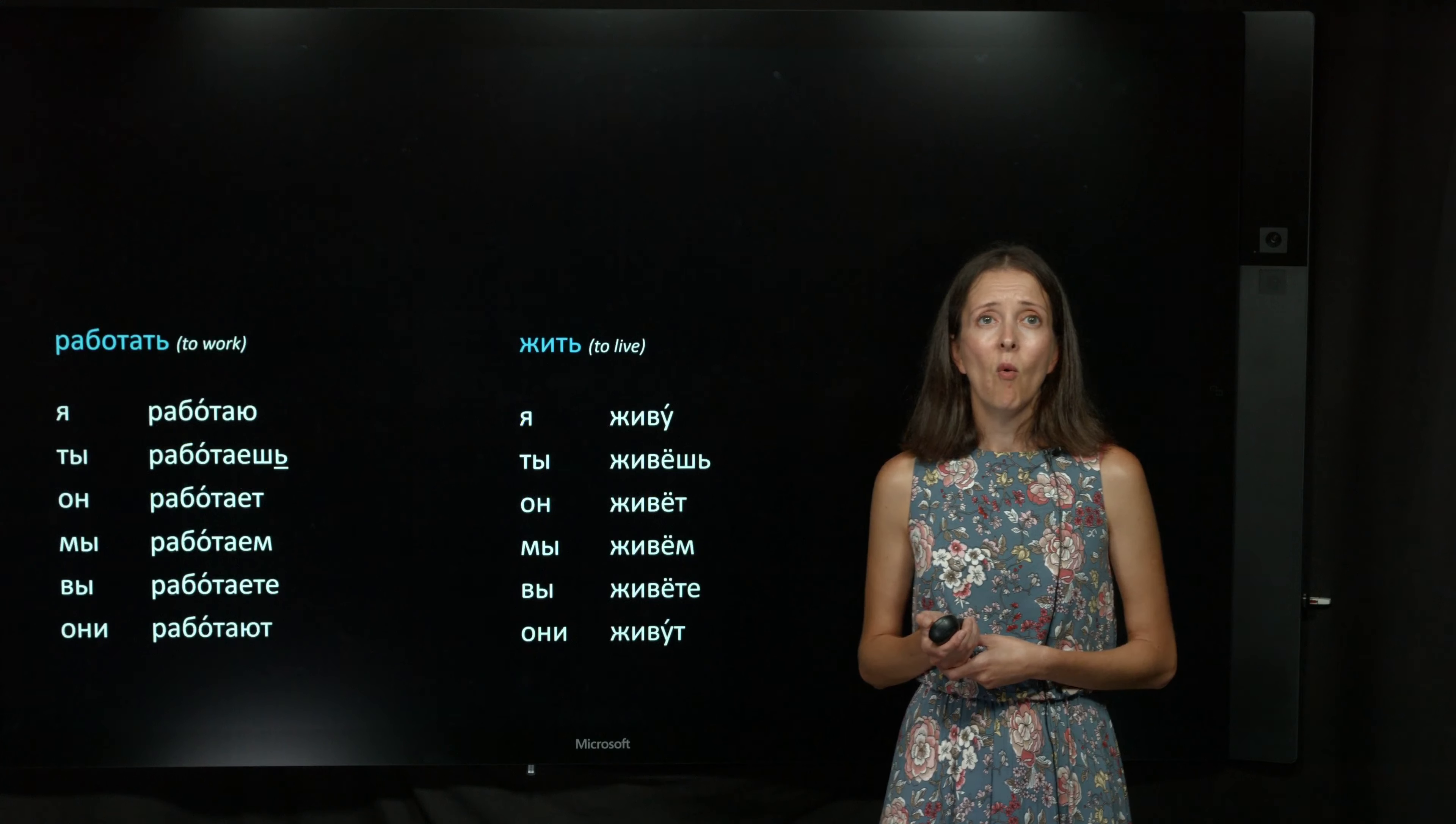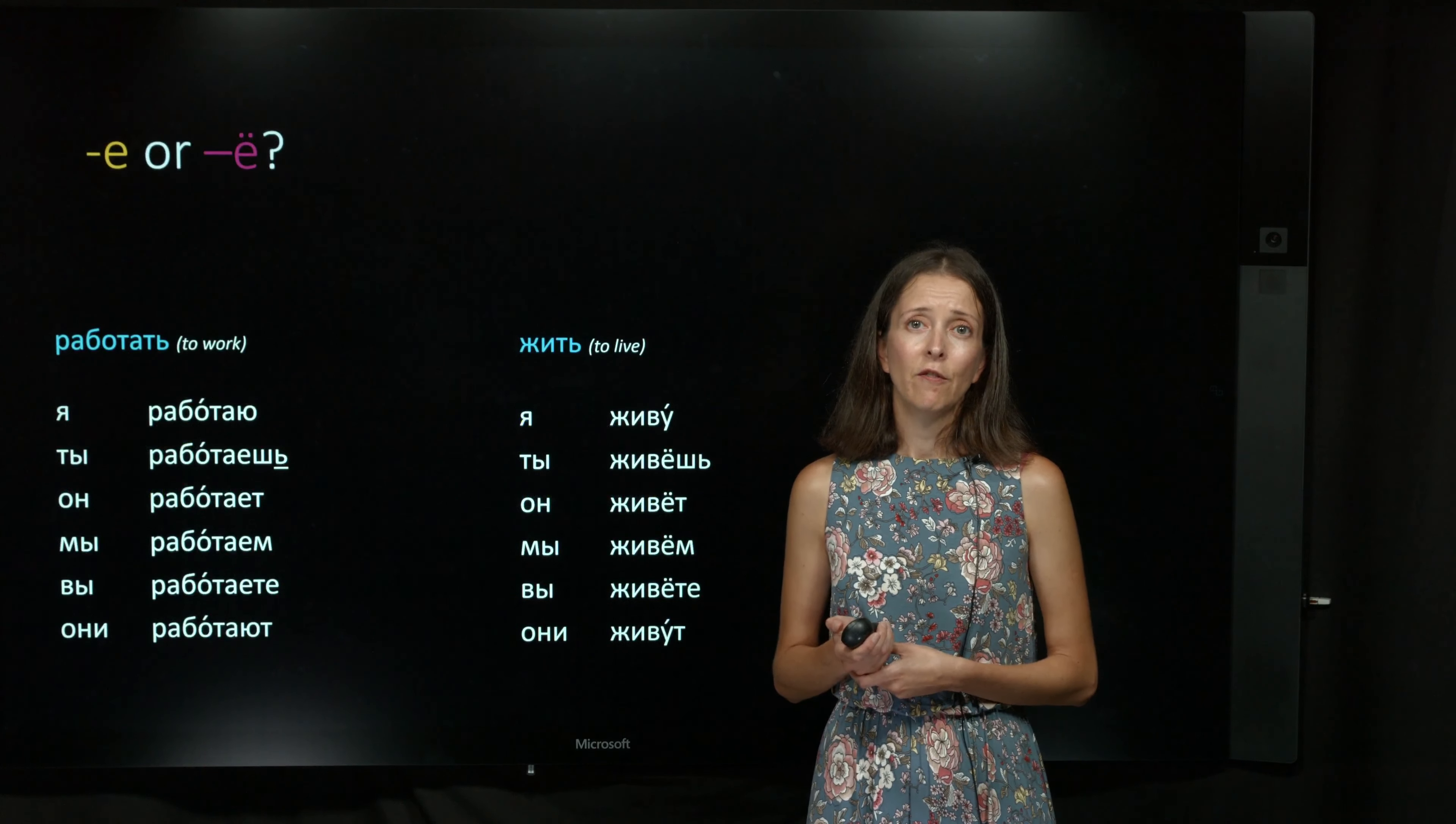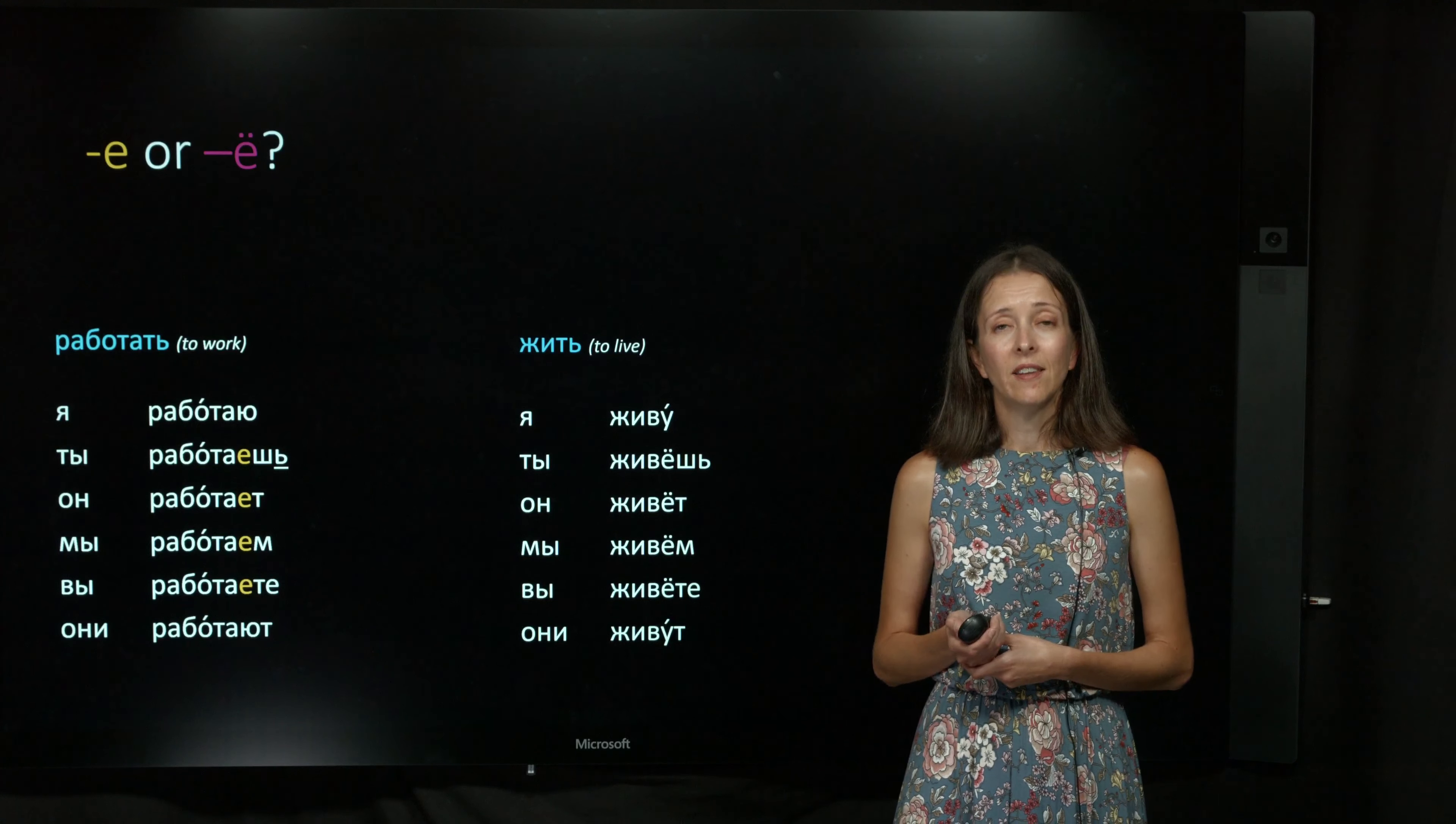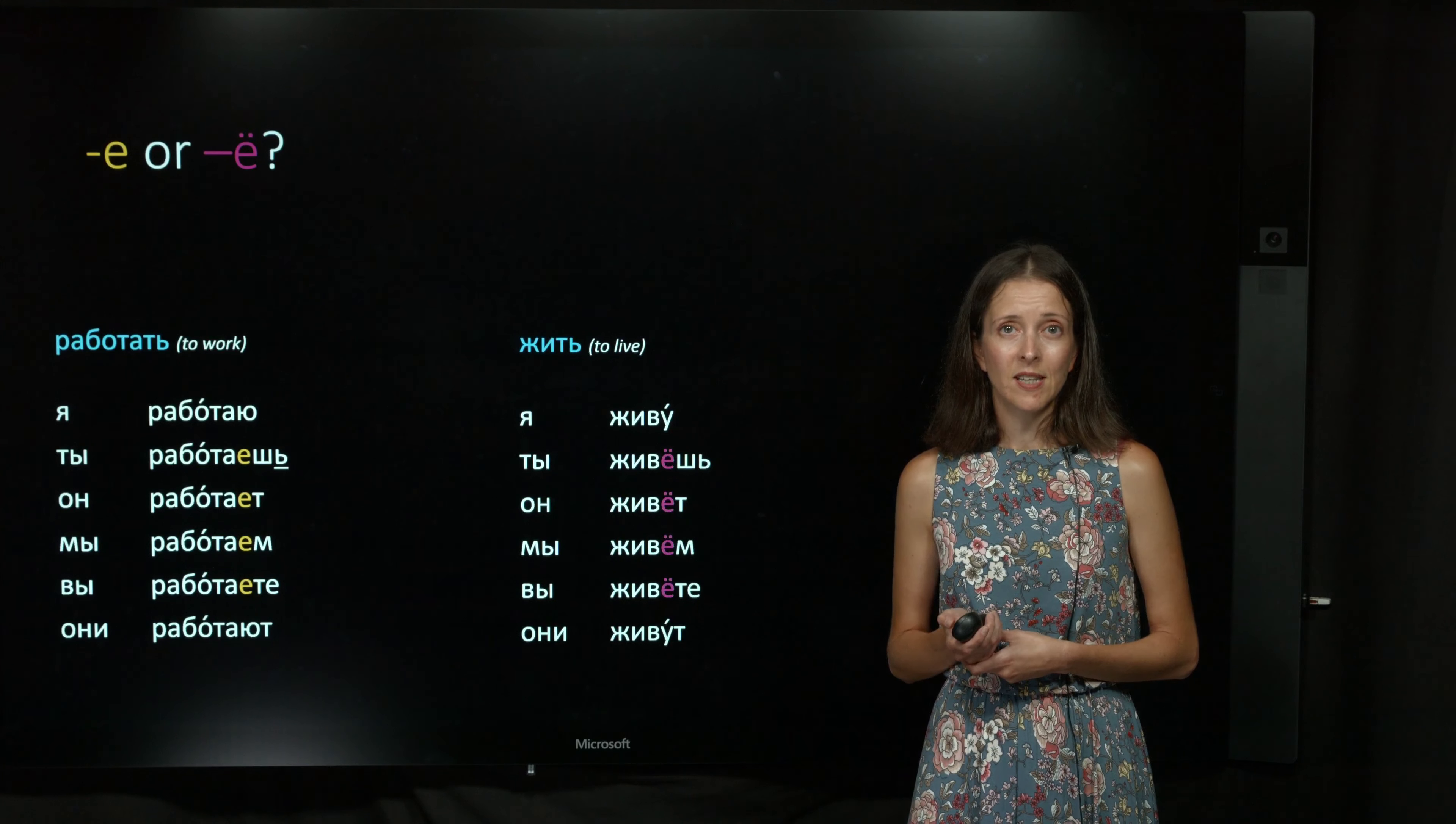Another common question is, why do some first conjugation verbs have the letter Е in the endings, like работать, and others, like жить, have the letter Ё instead?